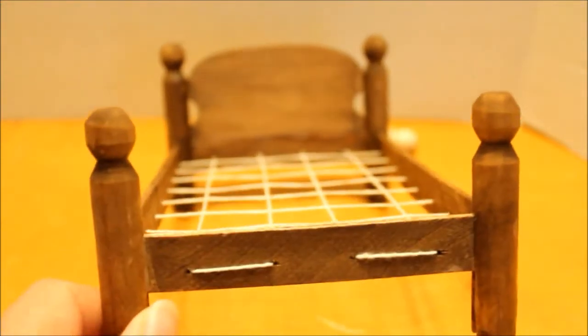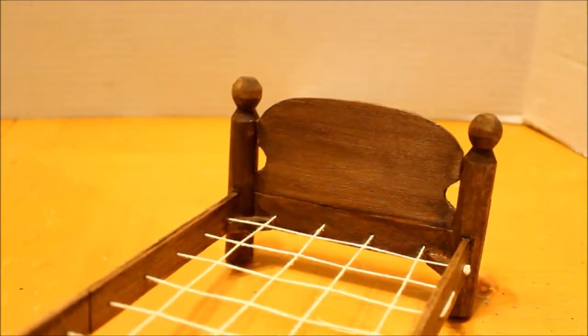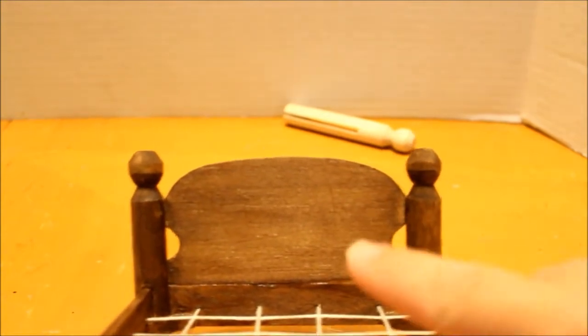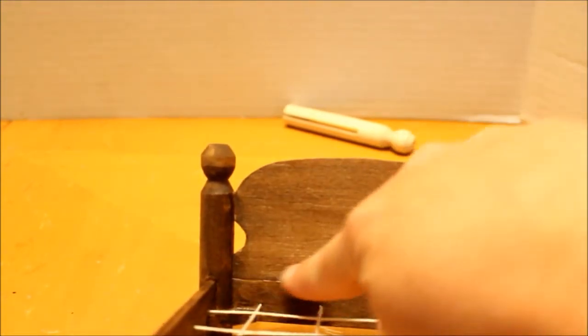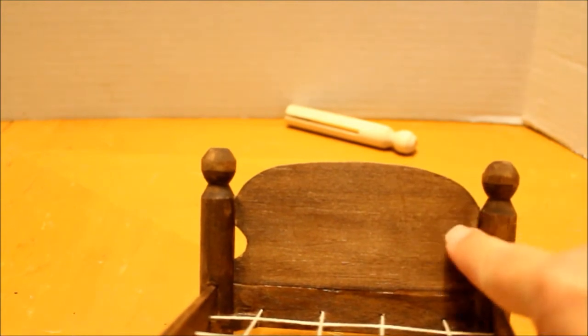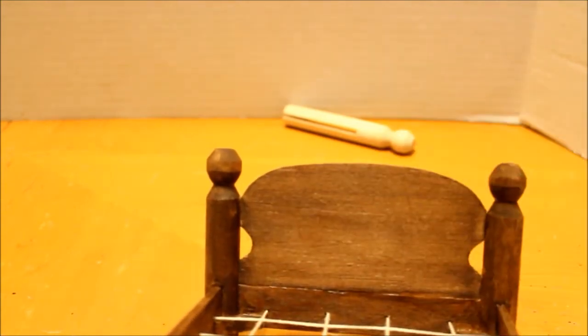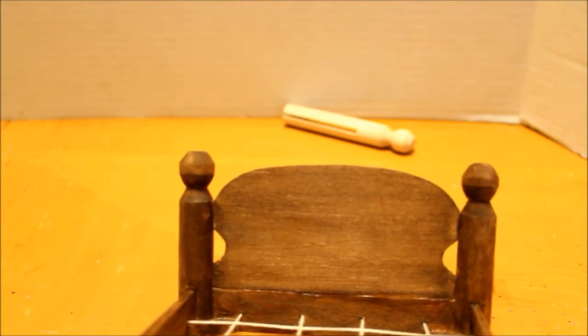Okay next you can make the headboard. In my blog there's a pattern that you can print out and just cut it out inside the black lines and then you can trace it onto balsa wood and cut it out with an exacto knife and you can sand the edges to make them smooth.